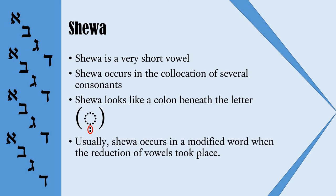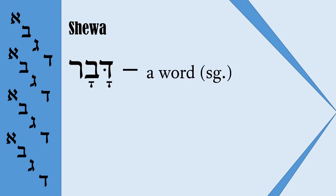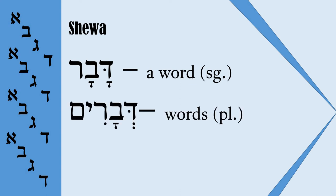Usually, Sheva occurs in a modified word when the reduction of vowels took place. For example, the word Davar, which means 'a word,' is a singular form. If we make a plural form of the same noun, it would be Davarim. Because the plural suffix is added to the word, the first vowel is reduced to Sheva. So we do not have a Kamets, but we have a Sheva in this case.